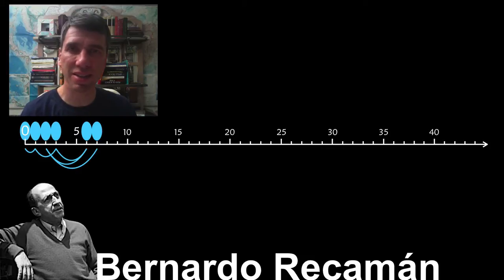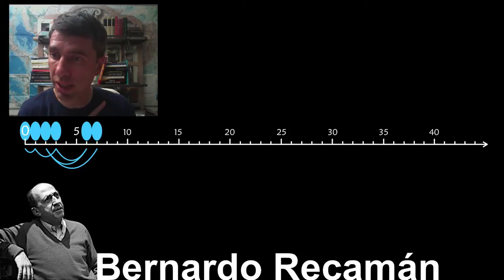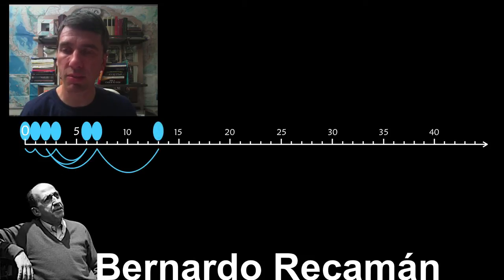Now we're at our sixth step. So we first of all try to move to the left. Can we do seven minus six? It's positive, so that would be equal to one. But we've already visited one, so we cannot do that. We have to move to the right. So that would be seven plus six, and we're at thirteen.